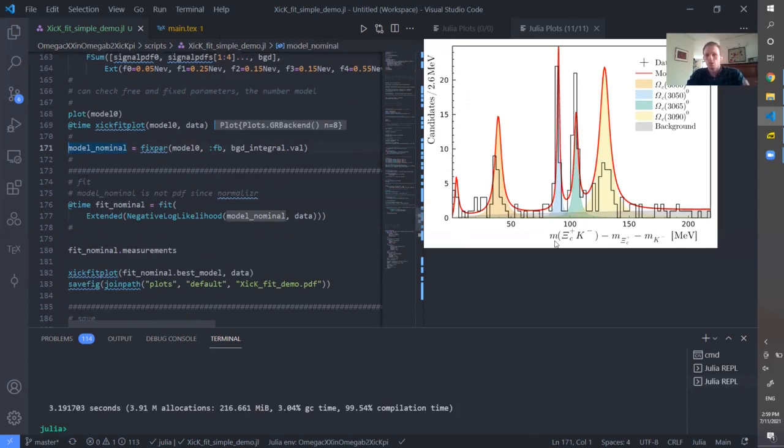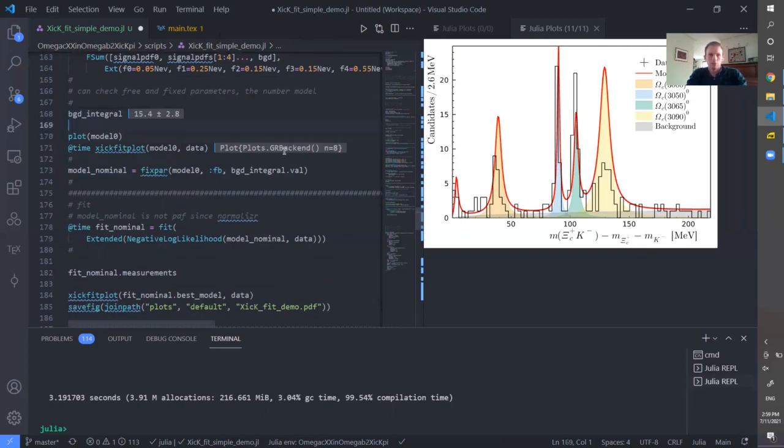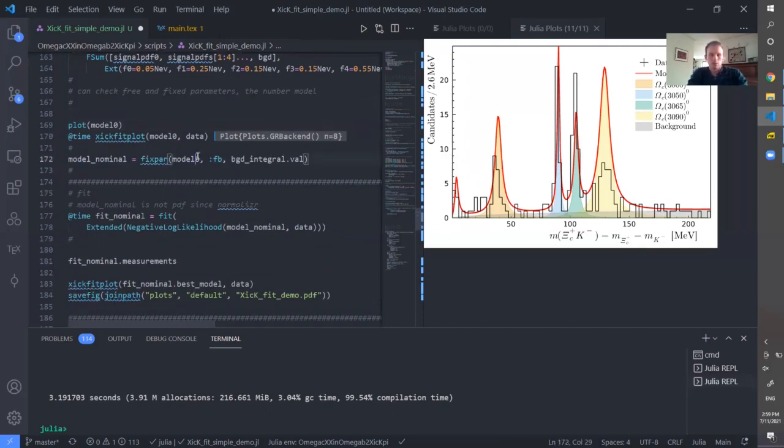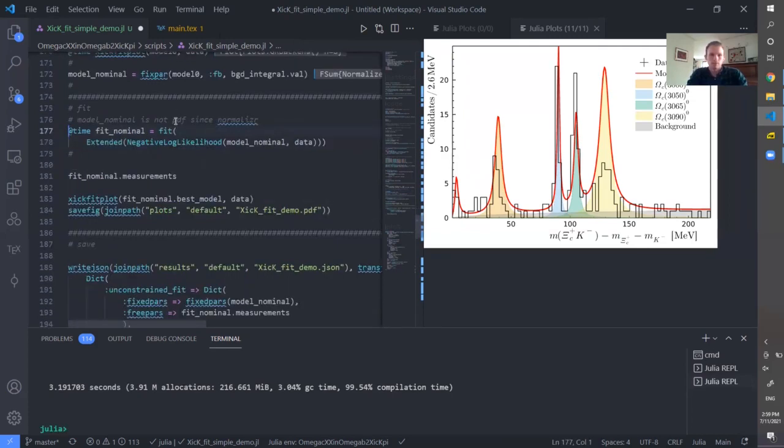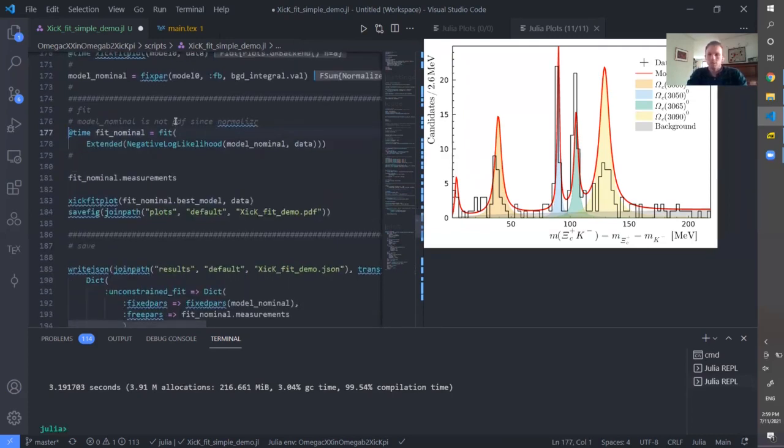Well, one more thing. I know from previous studies that the amount of the background accounts for 15 events out of this 200. That's why I will fix my parameter FB to 15.